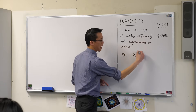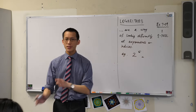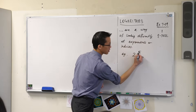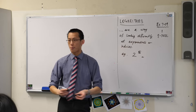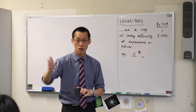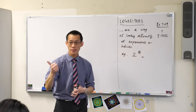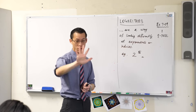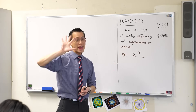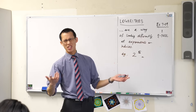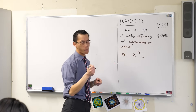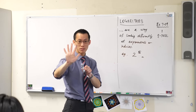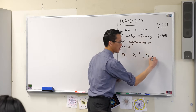Take 2 to the power of 5. Don't tell me the answer — tell me what that means. This is an abbreviation for a particular kind of operation. It means 2 times 2 times 2 times 2 times 2. If you do that five times, you get 2, 4, 8, 16, 32. So 2 to the power of 5 is 32.